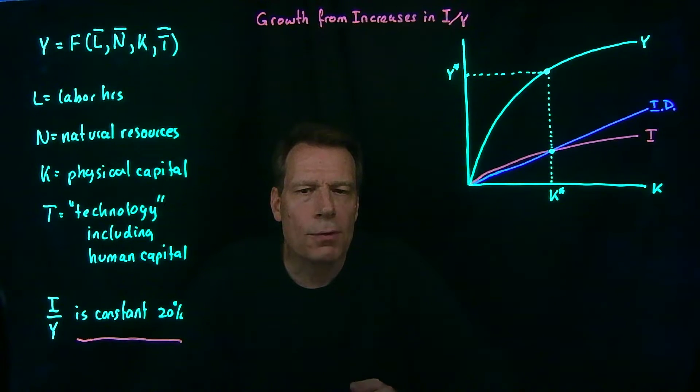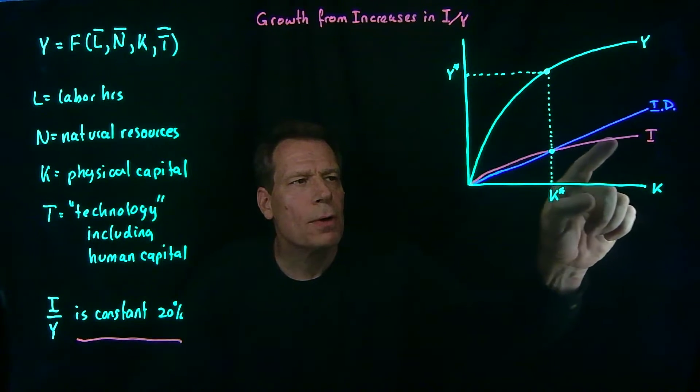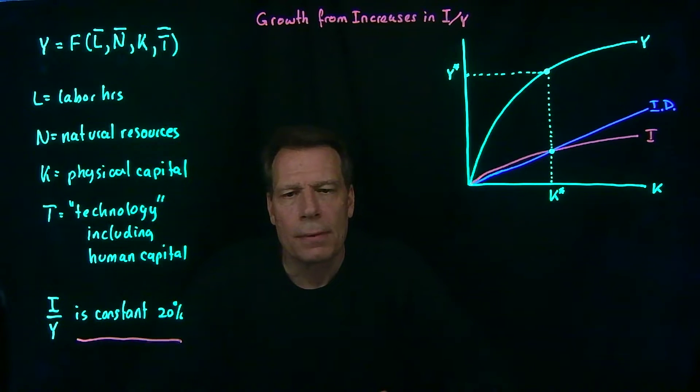Now imagine that we could find a way to increase the investment share of GDP, either through public investments in physical capital or through incentives that increase private investment in physical capital. In that case, the investment curve would rotate up.